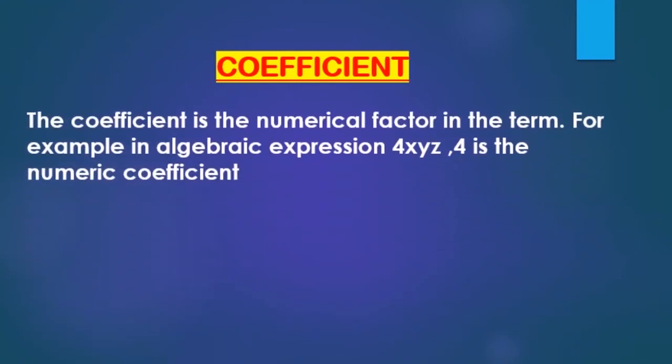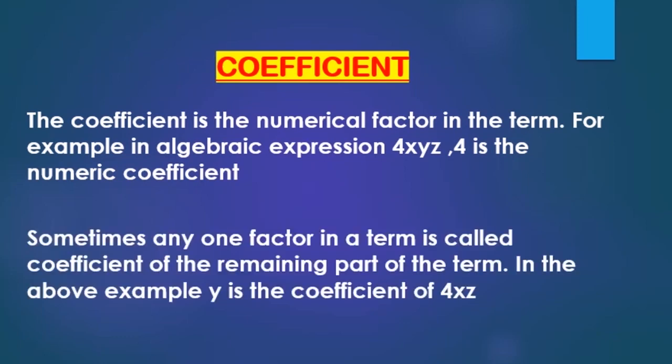Tanya, explain coefficient. Yes ma'am. The coefficient is the numerical factor in the term. For example, in the algebraic expression 4xyz, 4 is the numerical coefficient. Sometimes, any one factor in a term is called the coefficient of the remaining part of the term. In the above example, y is the coefficient of the remaining part, that is 4xz.